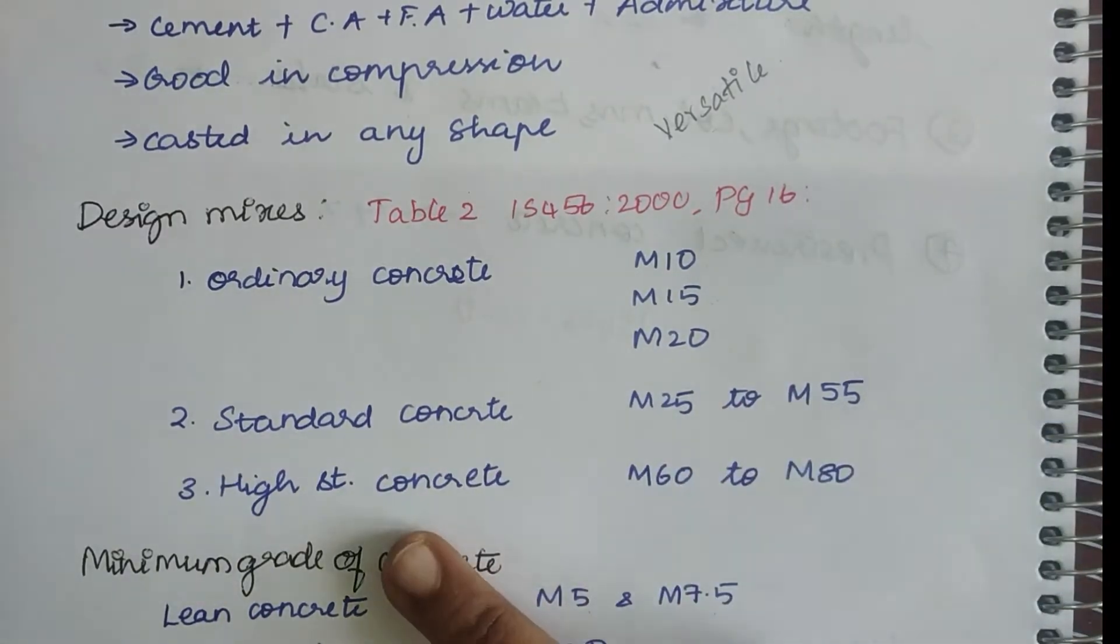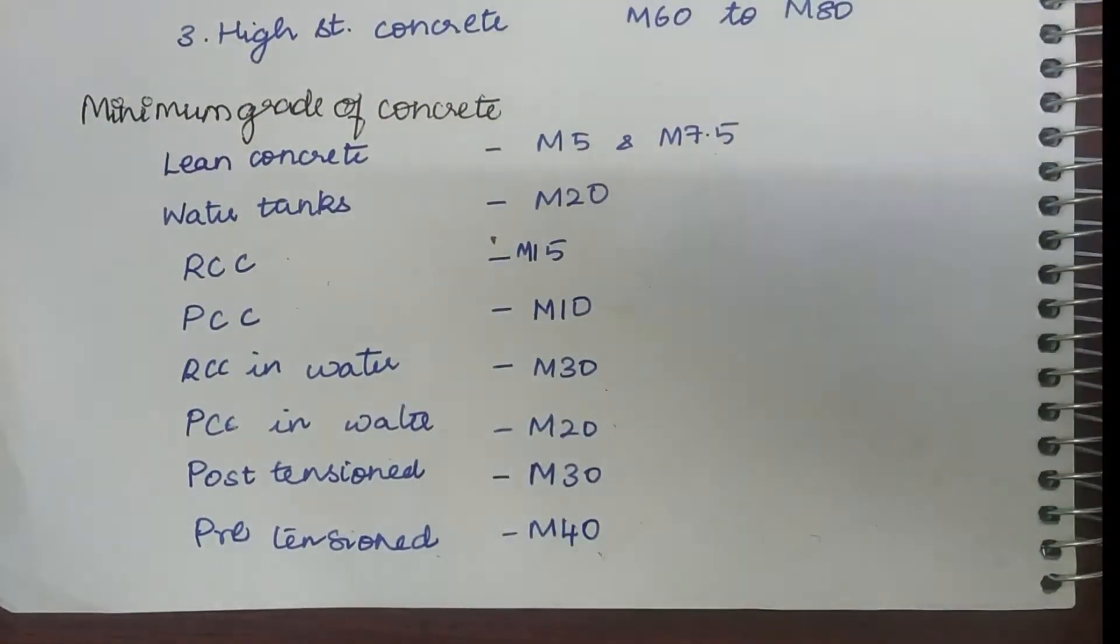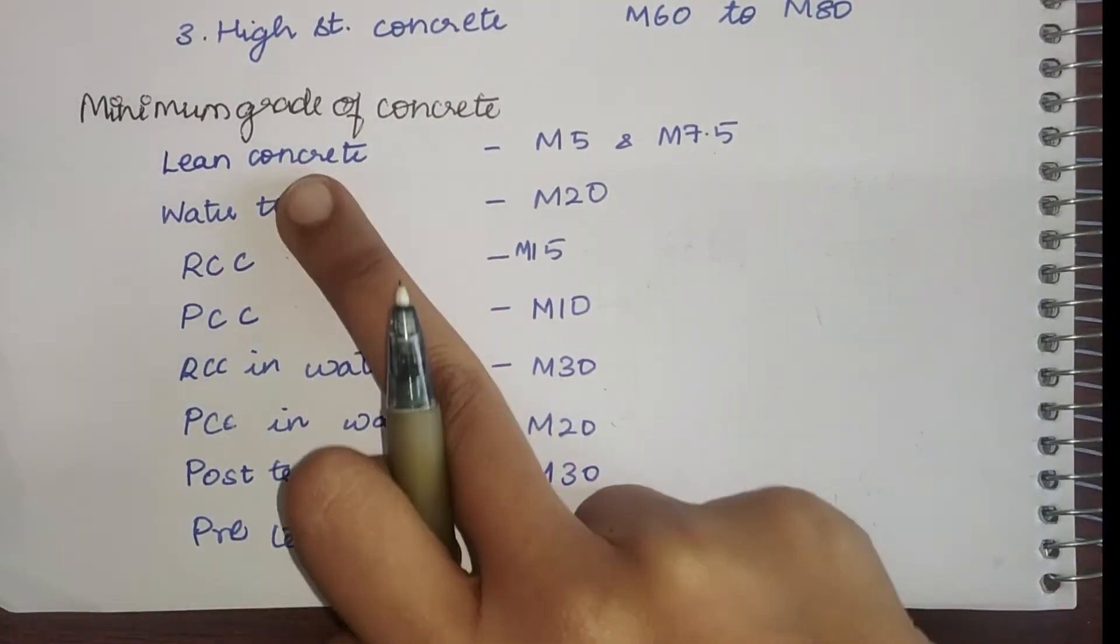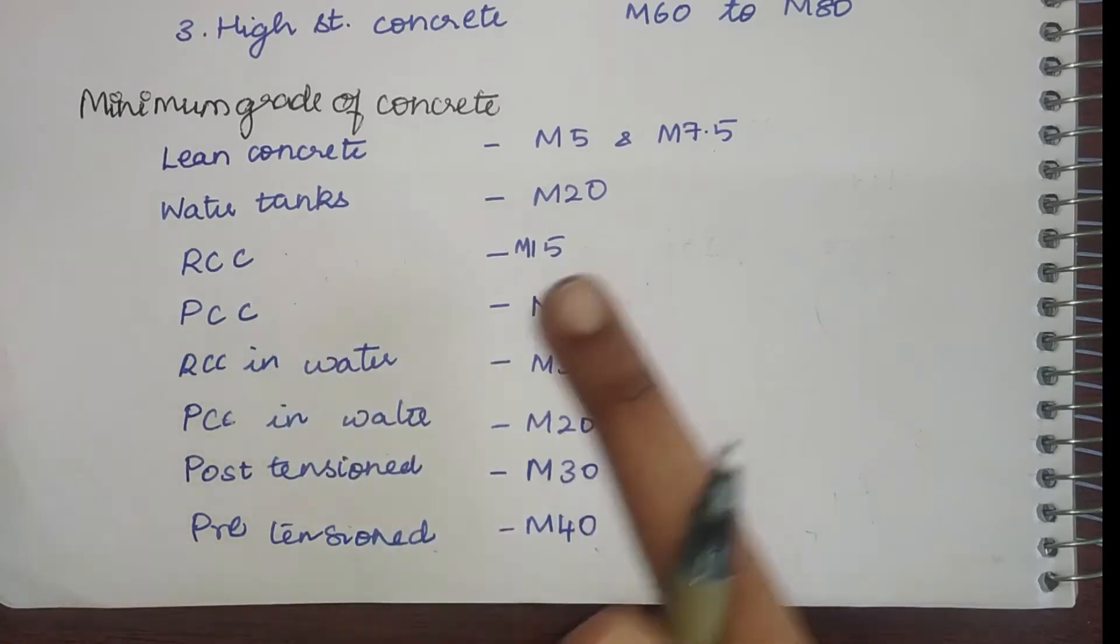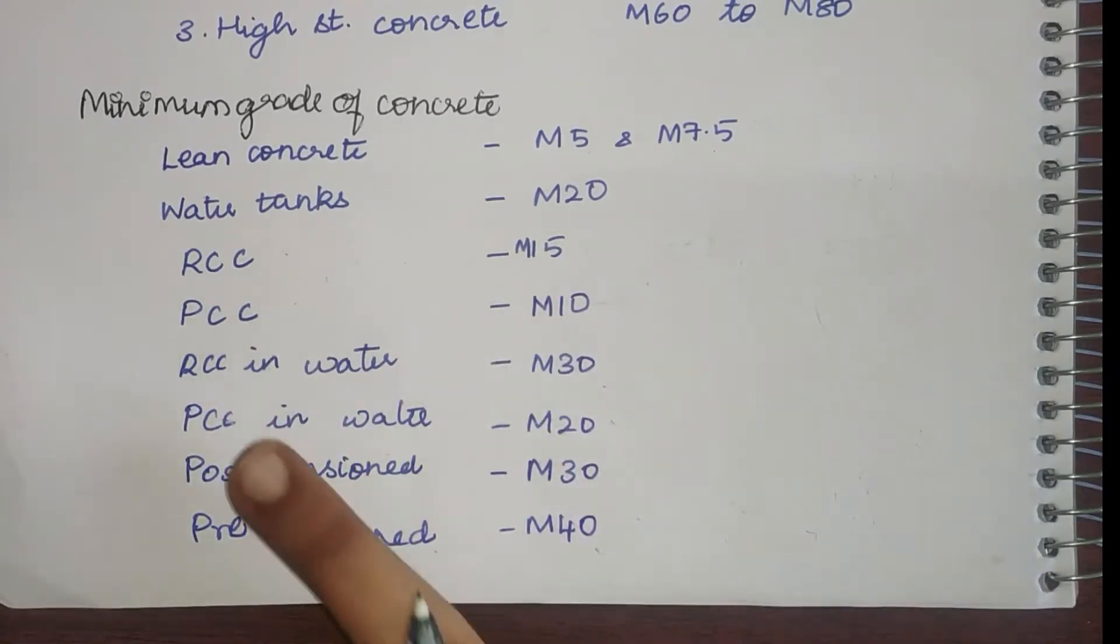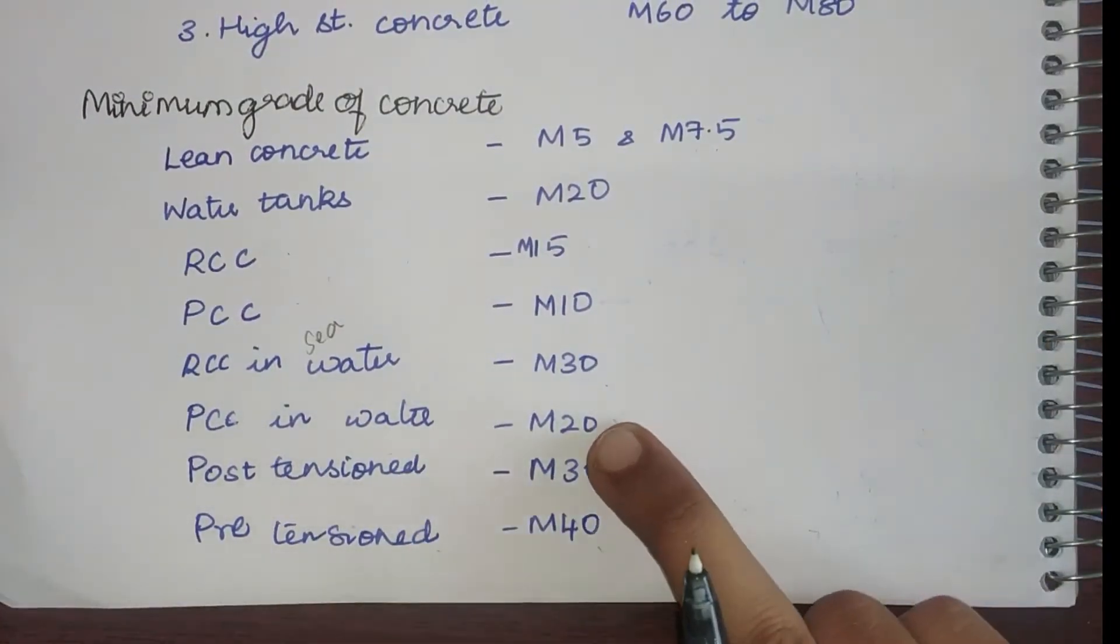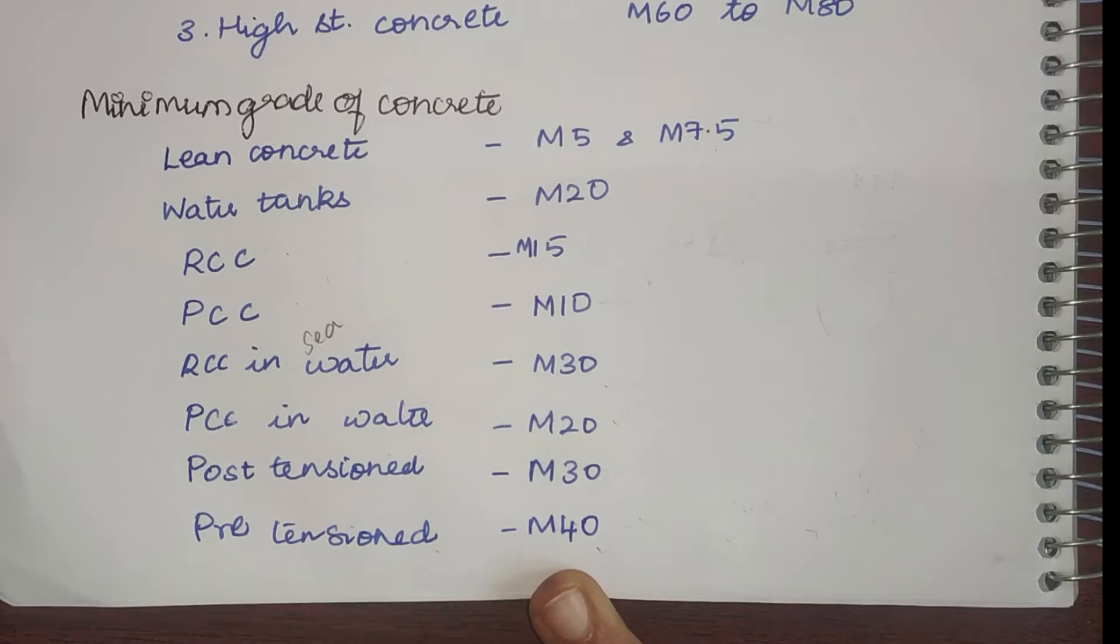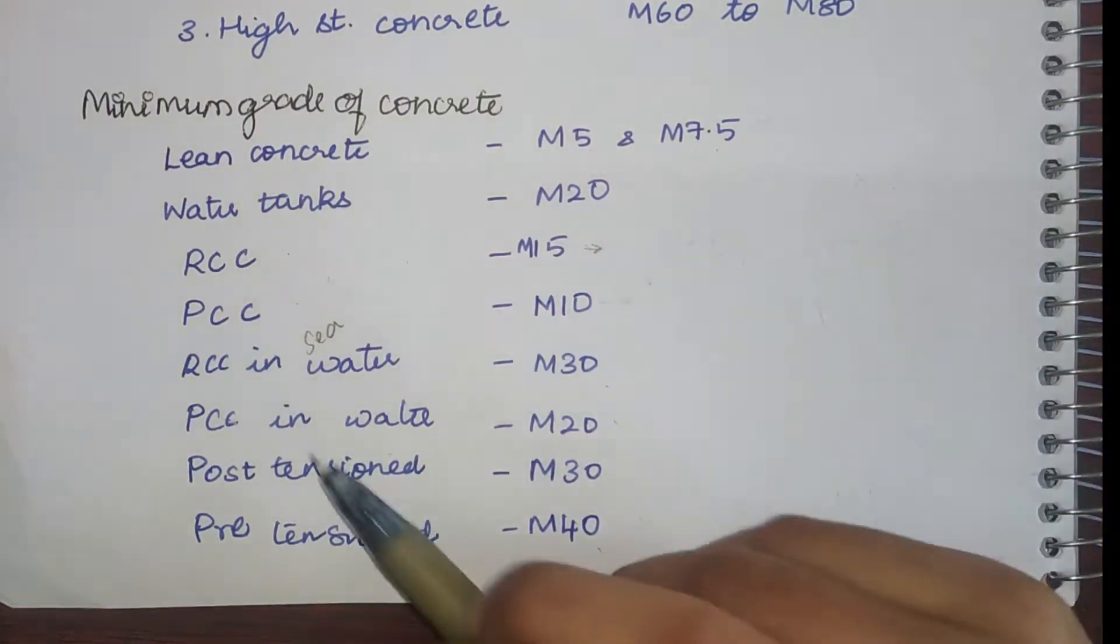Next comes the important topic which is the minimum grade of concrete. This is a very important table which you should keep in mind. If possible, grab a screenshot because so many questions have been asked from this topic. For lean concrete this is M5 and M7.5. For water tanks it is M20. For RCC structures it is M15. PCC it is M10. RCC in sea water it is M30. PCC in water it is M20. In post-tension pre-stress structures it is M30, and pre-tension pre-stress structures it is M40.